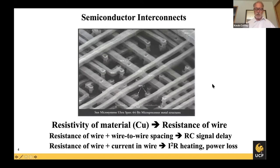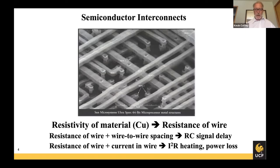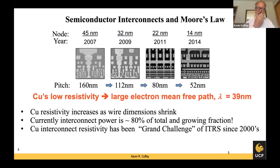The other thing going on is that simple resistance in the wire with the current necessary to propagate signals gives us I²R heating and power loss. In our latest generation of microprocessors, the interconnect power loss is about 80% of the total power loss and heat generation in the device. All these things have been scaling with Moore's law — for example, going from the 45-nanometer node to the 14-nanometer node, and I think we're around the 9-nanometer node today.